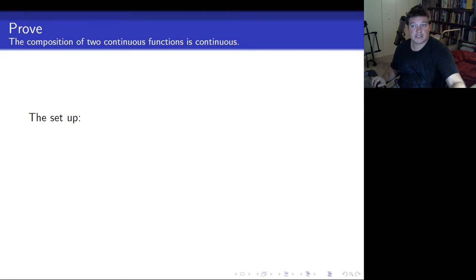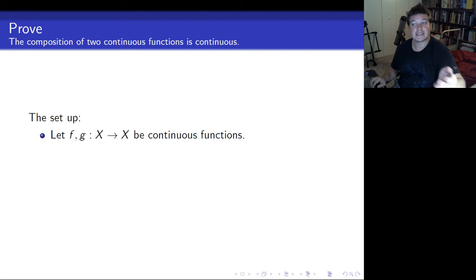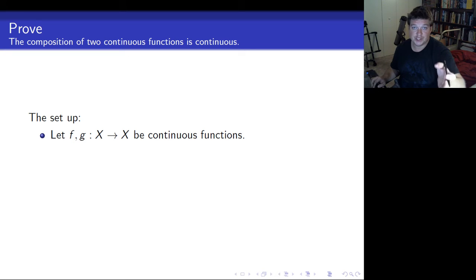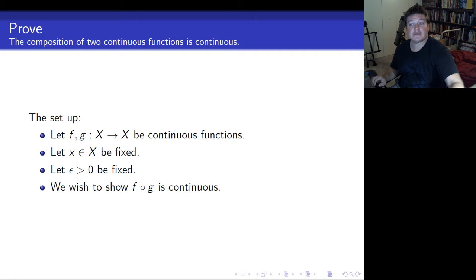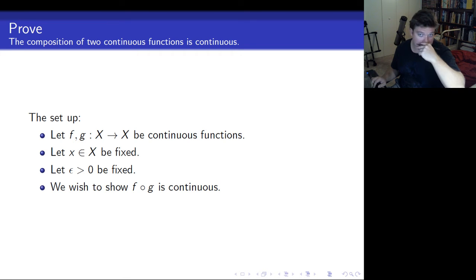In order to prove a composition of two continuous functions is continuous, you need to have two continuous functions. So let f and g from X to X be continuous functions. I could have done f from X to Y and g from Y to Z for a bit more generality, but it's the exact same proof — just more bookkeeping. We're also going to fix an arbitrary point in X, fix an epsilon greater than zero, and we wish to show that f of g is continuous by finding a delta that satisfies the definition.